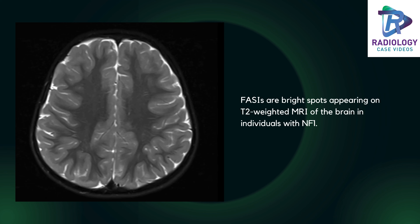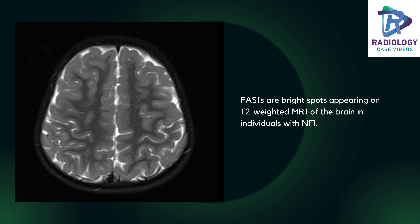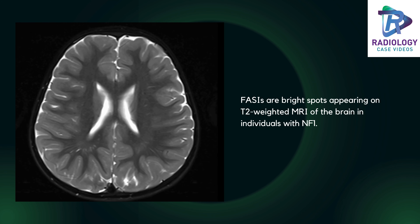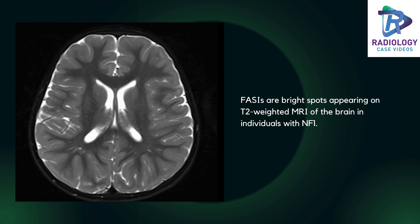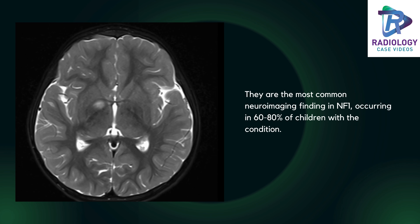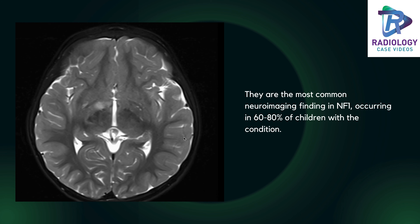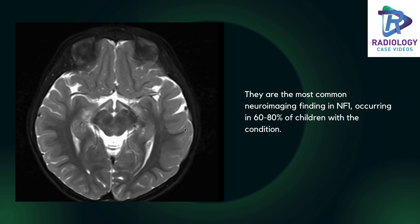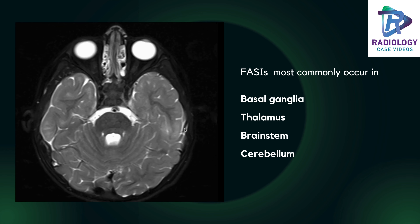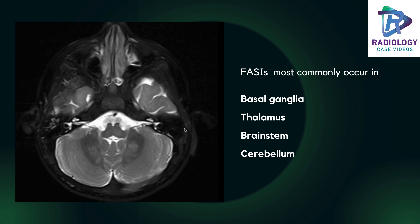This is a 10-year-old child with café-au-lait spots referred for MRI brain due to poor scholastic abilities. Here in the globus pallidus on the right side, you are able to see a hyperintense lesion. You could also appreciate a few hyperintense lesions in bilateral dentate nuclei.